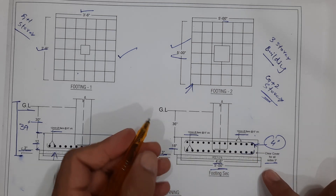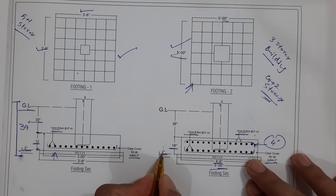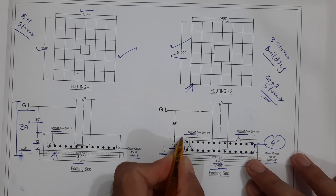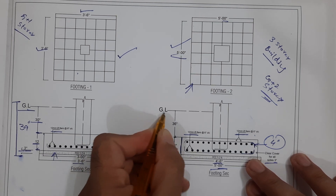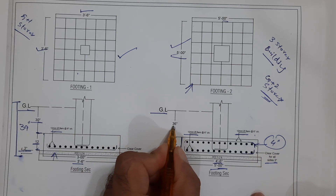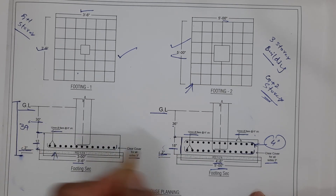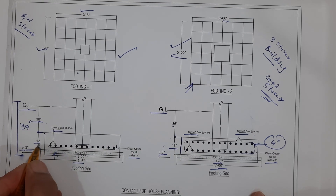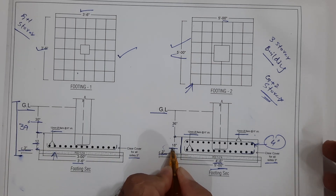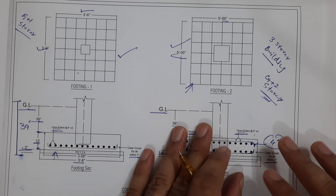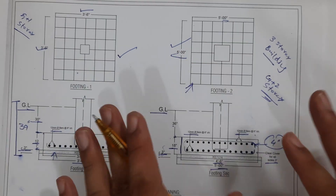For footing two, the PCC is three inches, the bed depth is 18 inches, and from the bed to ground level the depth is 36 inches. For comparison, footing one had a 30-inch depth with a 12-inch bed depth, while footing two has a 36-inch depth with an 18-inch bed depth.